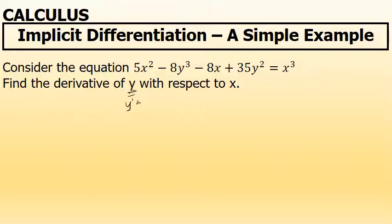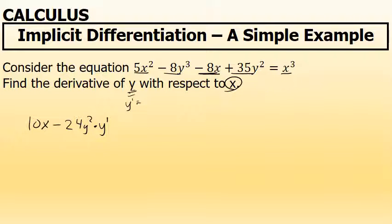Let's start by differentiating both sides of the equation, looking at each term individually. The derivative of 5x squared is simply 10x. The derivative of 8y to the third — since I'm differentiating with respect to x and this is a y variable — I apply the power rule to get 24y squared, then multiply by y prime. The derivative of negative 8x is negative 8. The derivative of 35y squared is 70y times y prime. On the right side, the derivative of x to the third is 3x squared.